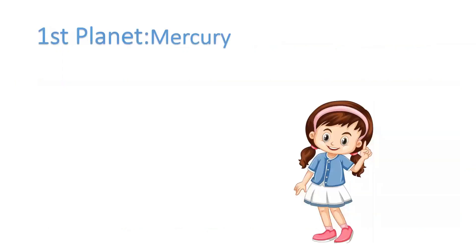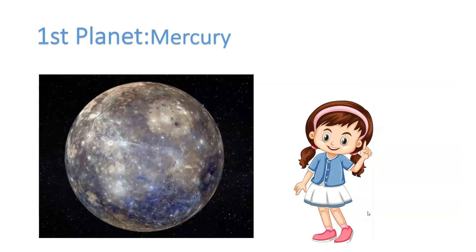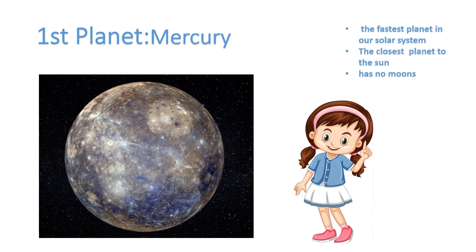The first planet is Mercury. Here's a pretty picture of Mercury for you. Now, let's learn the facts about Mercury. Mercury is the fastest planet in the solar system, and it is also the closest planet to the sun. Mercury has no moon.